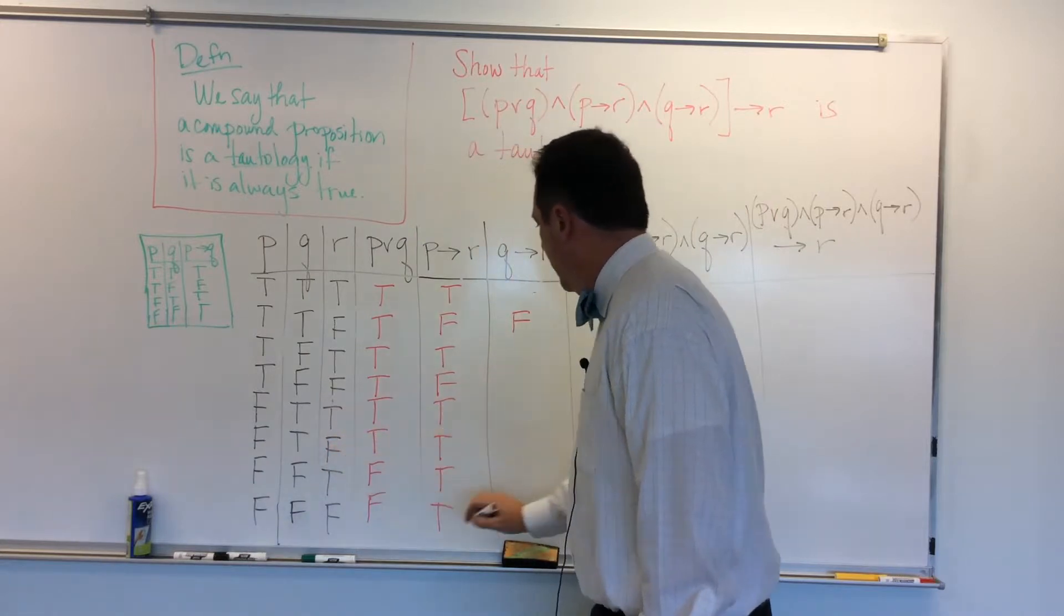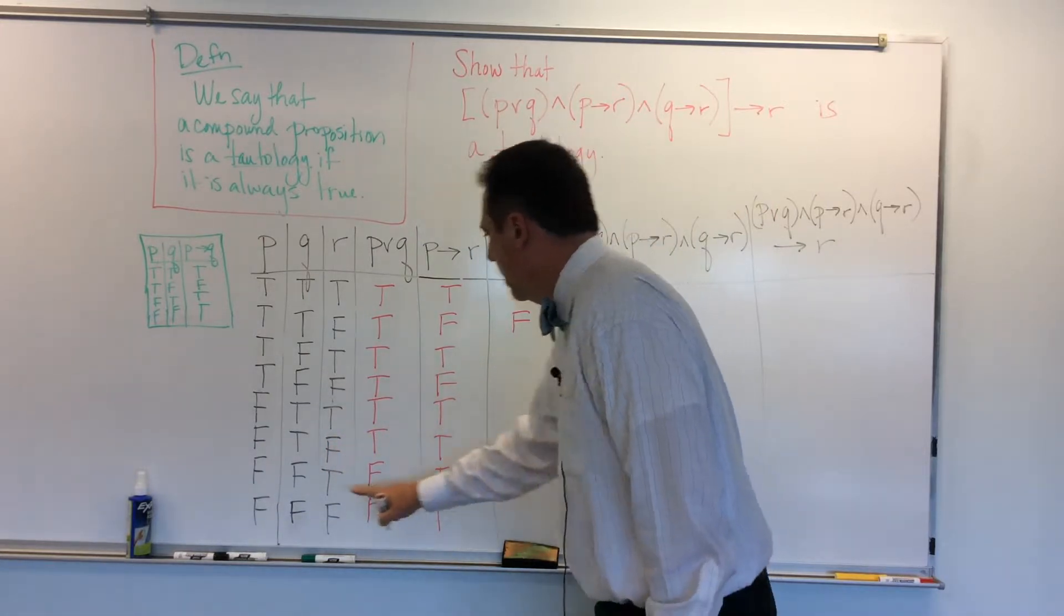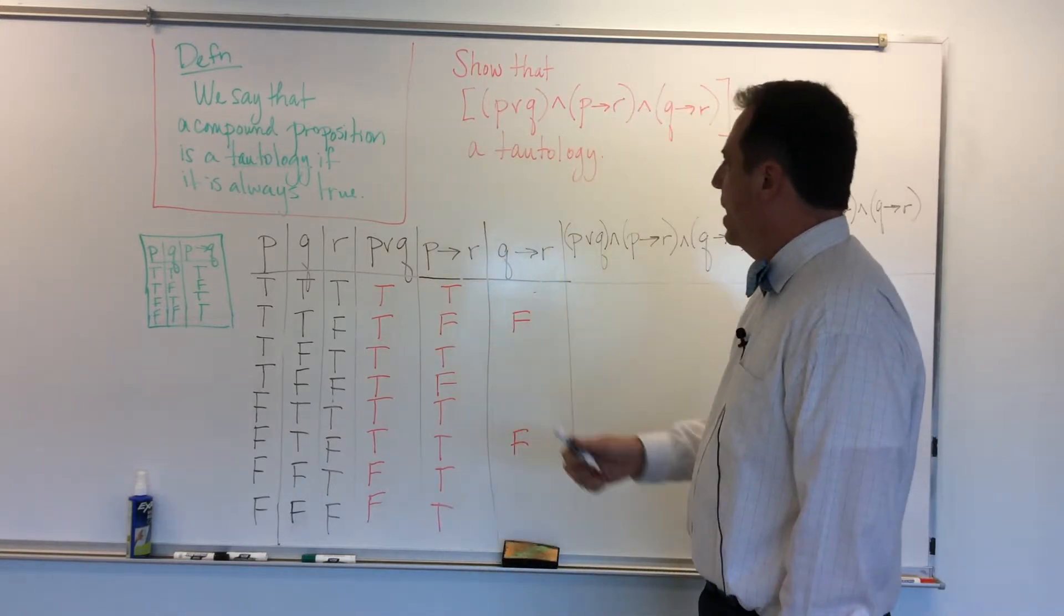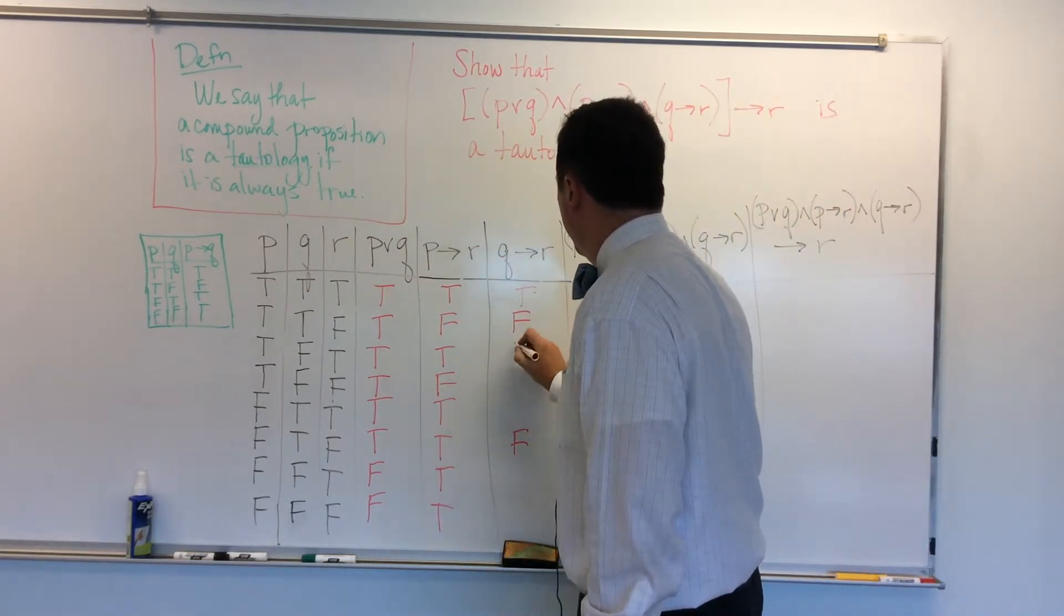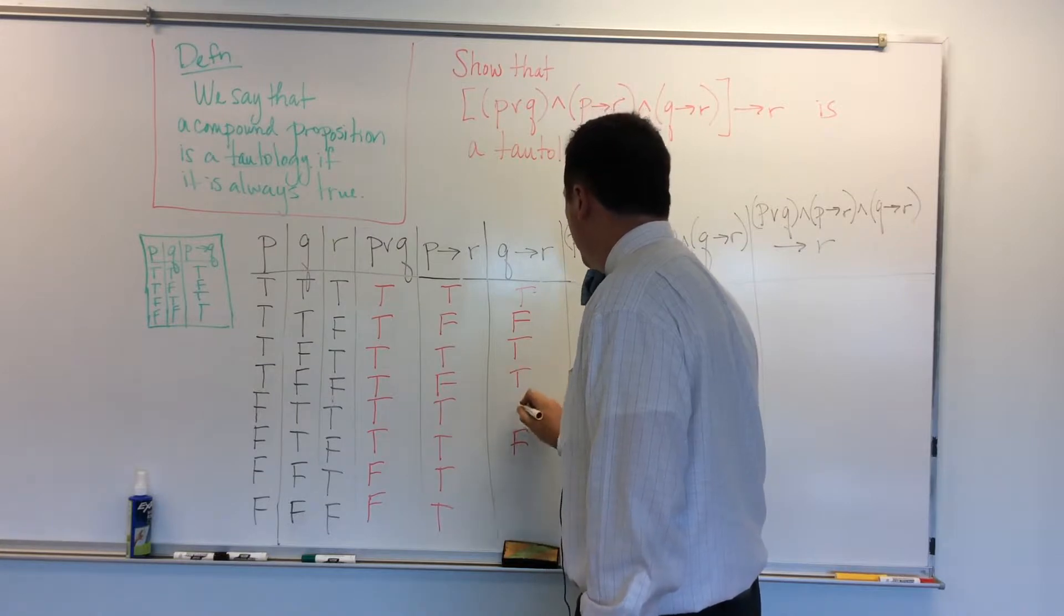I'm going to go ahead and fill in false for that one. And here's one down here, the third from the bottom, right? And the rest, I'm okay. They're all true. So I'm going to go ahead and fill in those true values. They're all true for the rest of them.